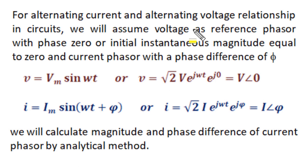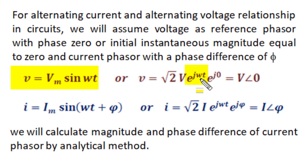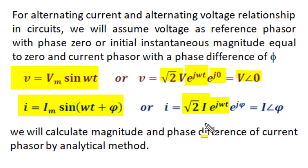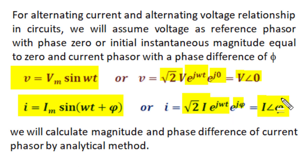To analyze sinusoidal alternating current circuits, we assume voltage as standard reference wave V_m sin(ωt). Its phasor is magnitude V at angle 0° in polar format. Current is taken as I_m sin(ωt + φ), with the same rotating factor e^(jωt), rms magnitude I, and initial phase angle φ. In analysis we need to find the relation between rms voltage and rms current and the relative phase difference angle φ.